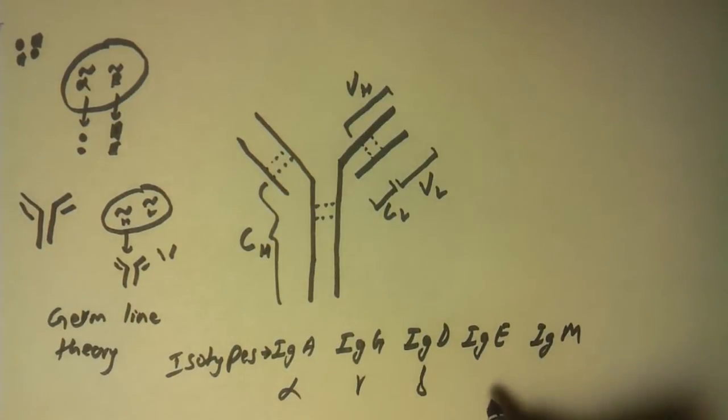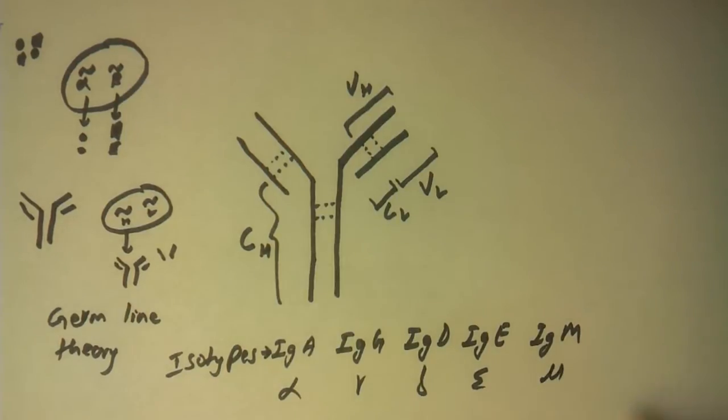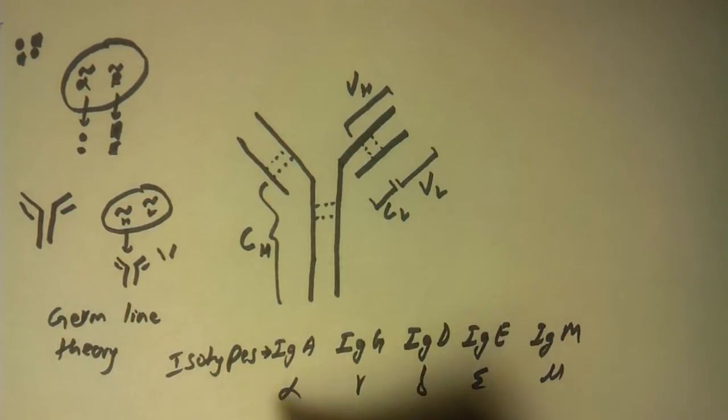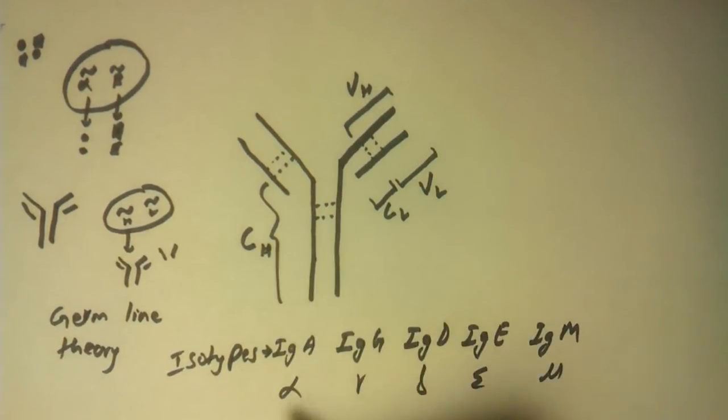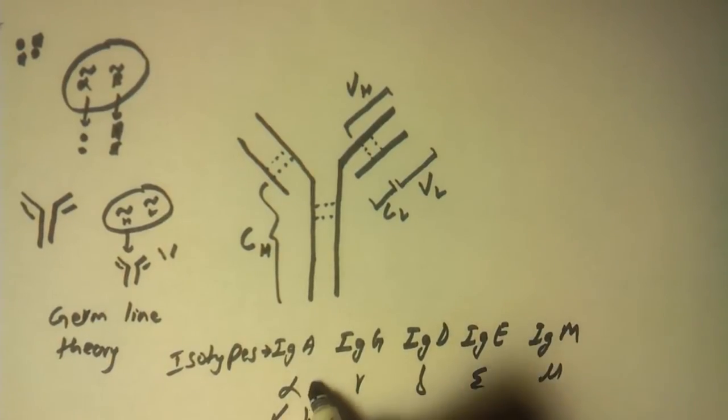And this constant heavy chain alpha has two different sub-isotypes: it has alpha 1 and alpha 2.